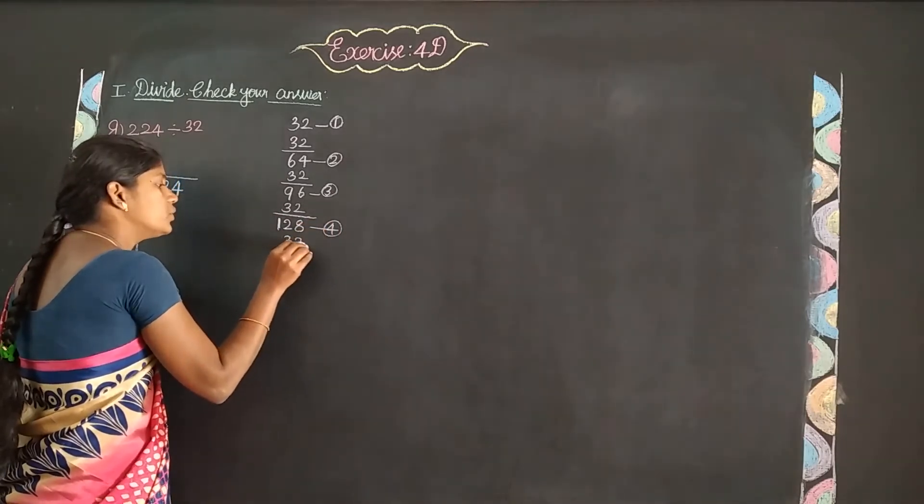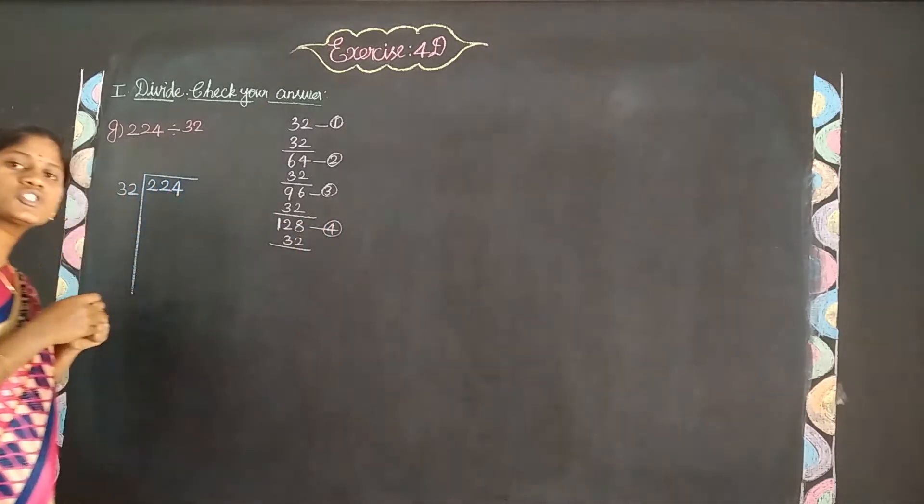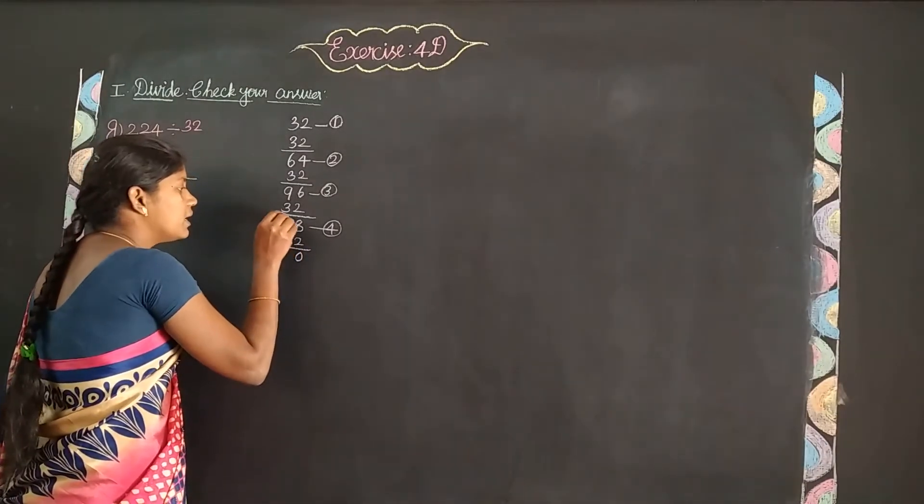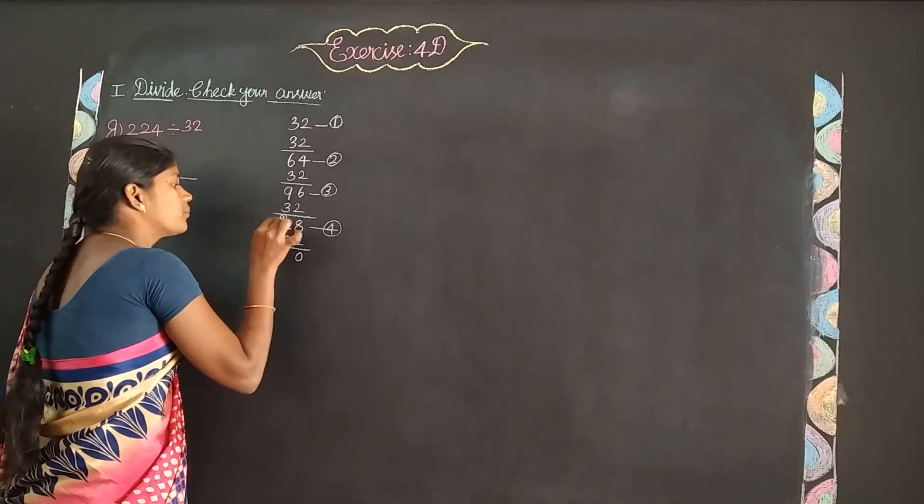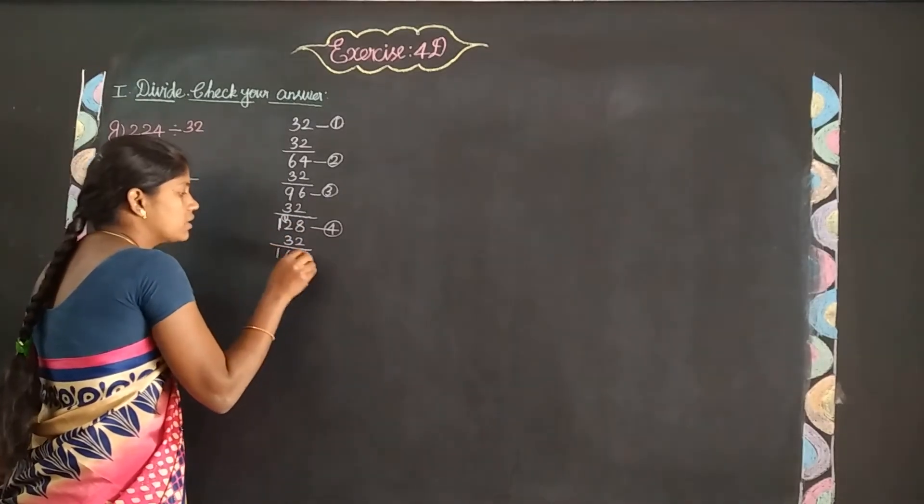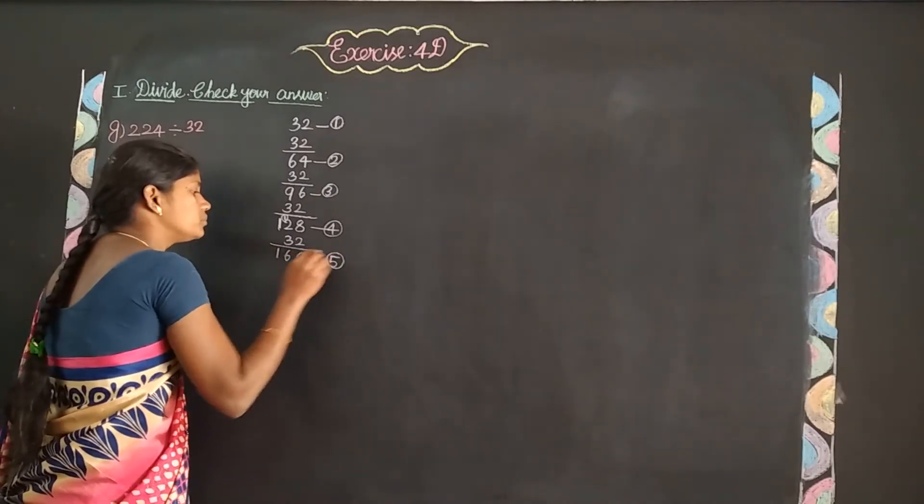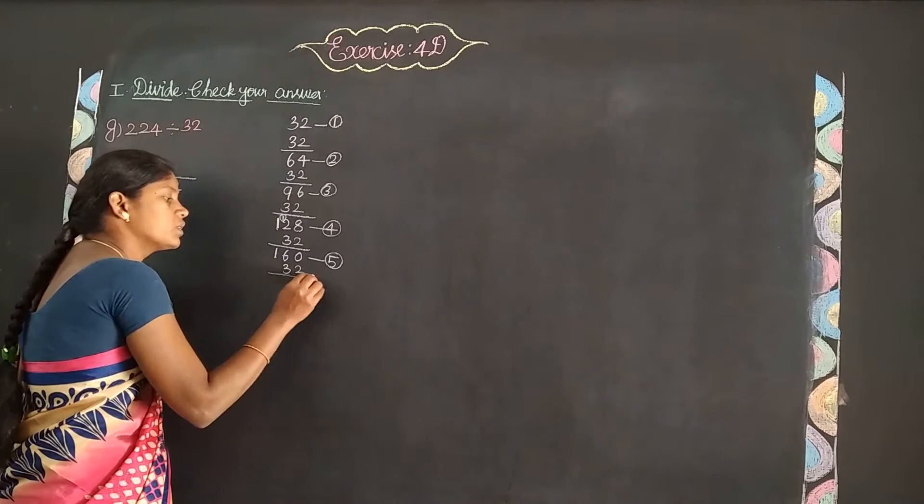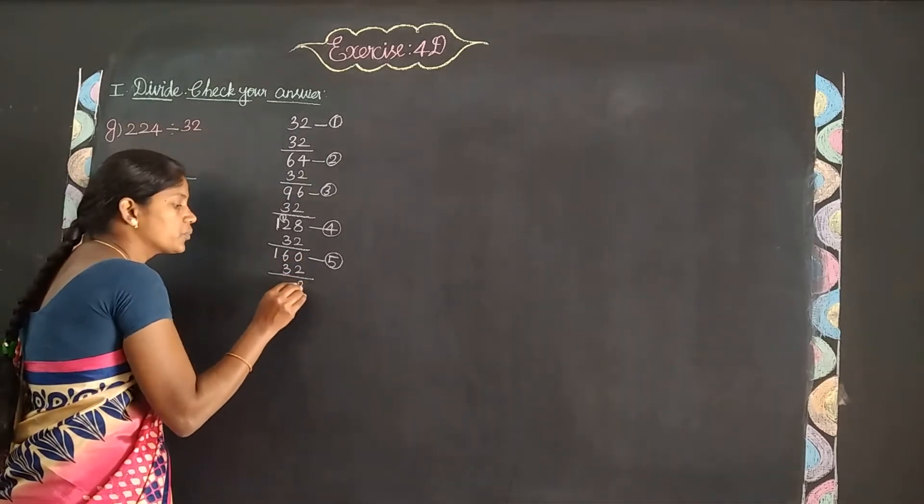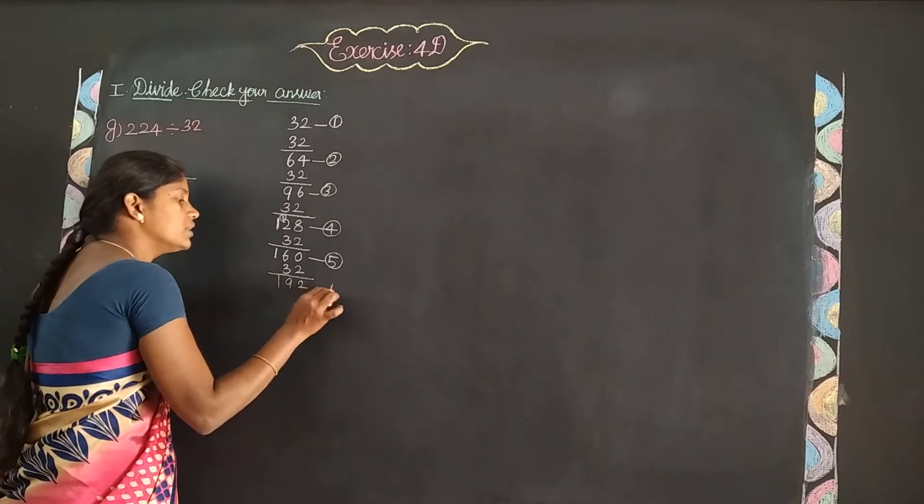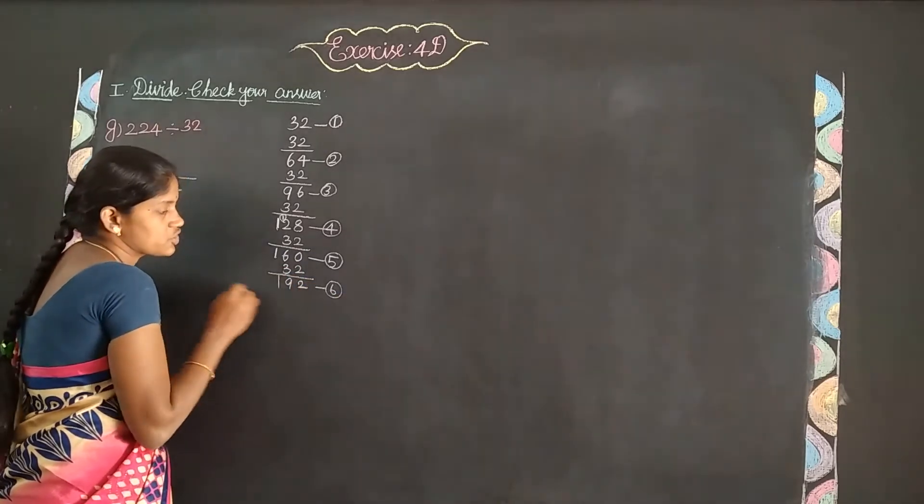5 times 32: 128 plus 32 equals 160. 6 times 32: 160 plus 32 equals 192.